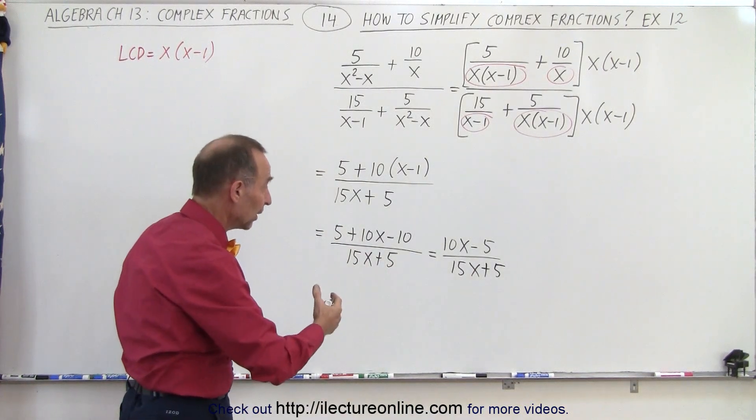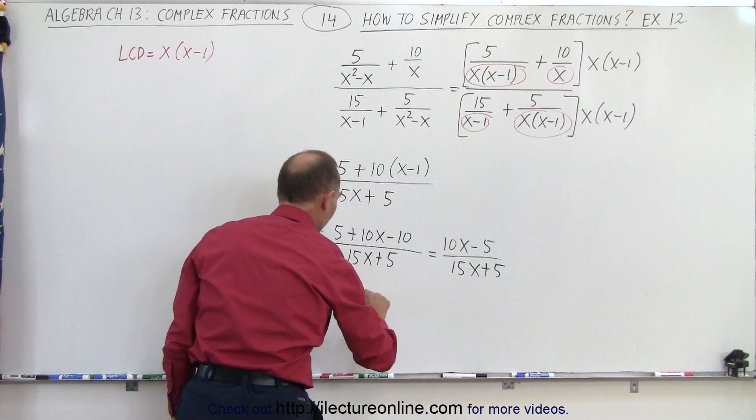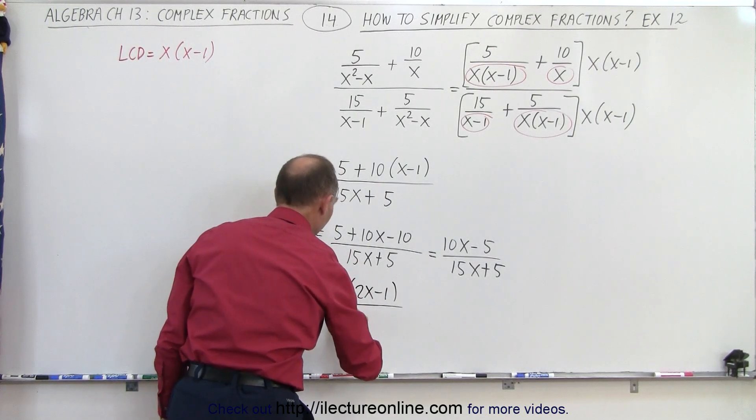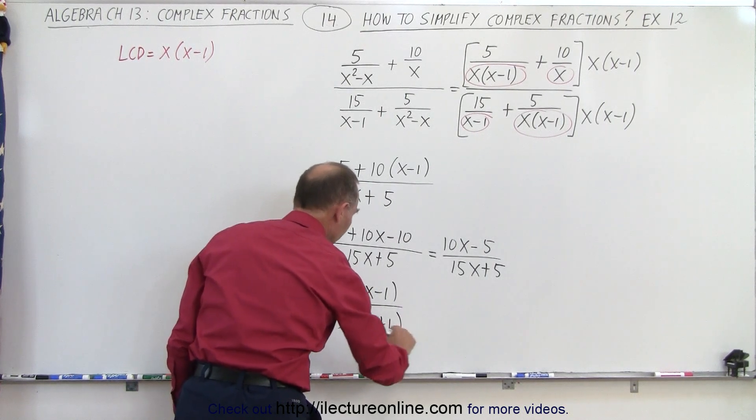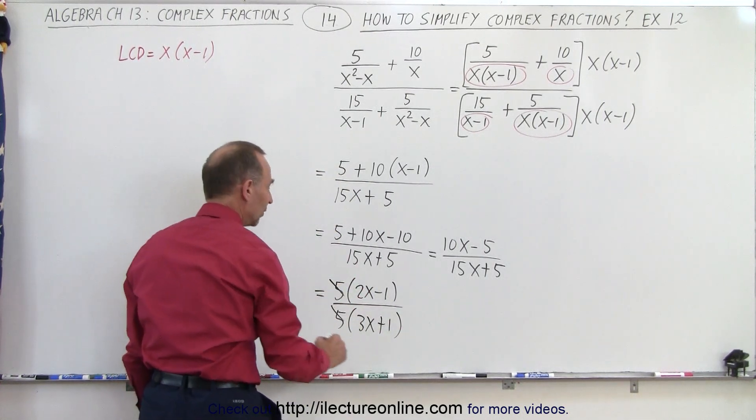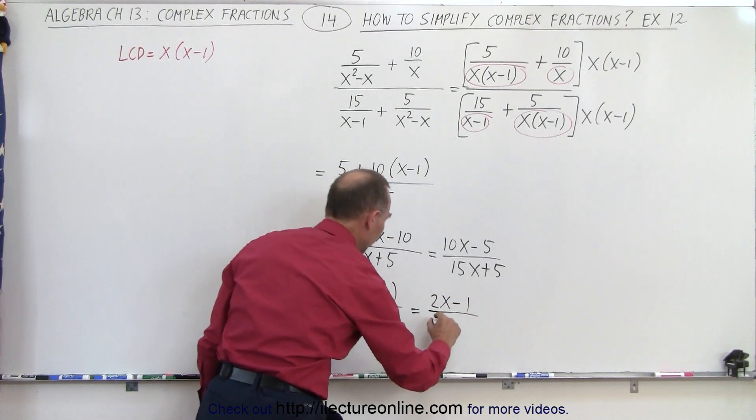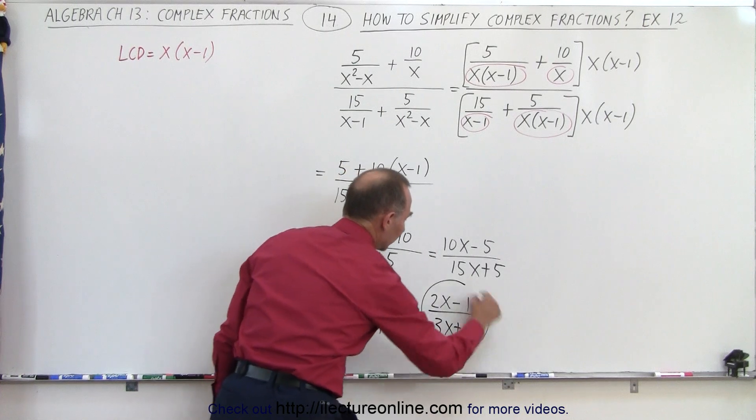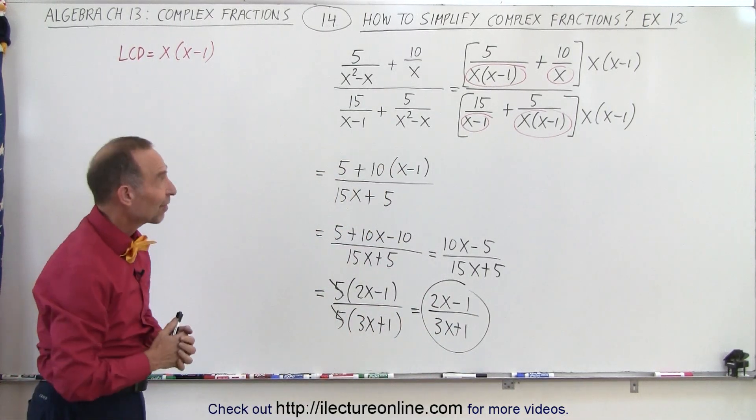And then, realizing we can factor a 5 out of the numerator and the denominator, this is equal to 5 times 2x minus 1 divided by 5 times 3x plus 1. And of course, the 5's cancel out, and we're left with 2x minus 1 divided by 3x plus 1. And that's the final simplified form of our original complex fraction.